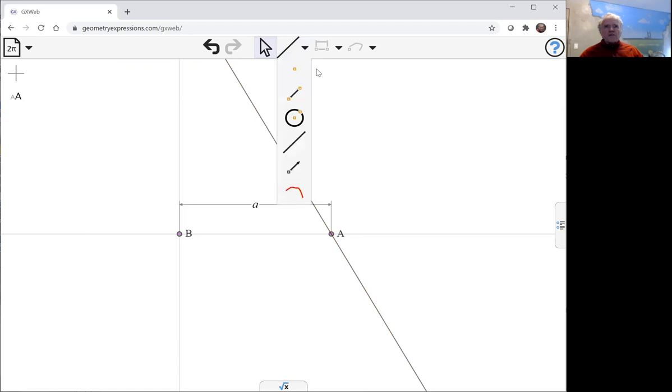And we have another line coming from b, segment coming from b and with a slider at c, which lets it slide up and down this line through a.